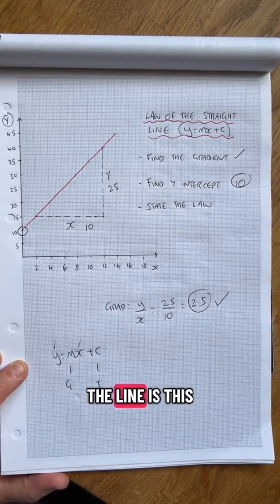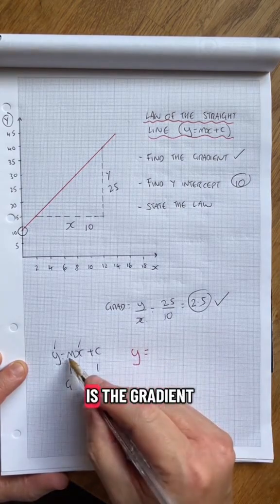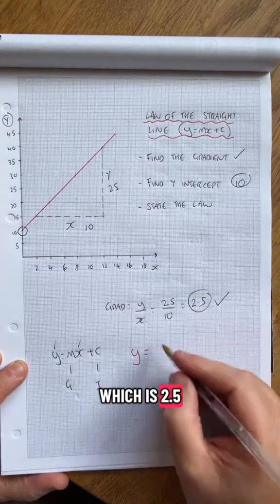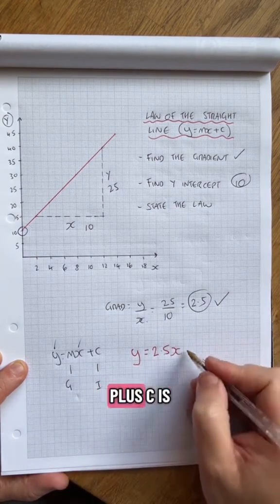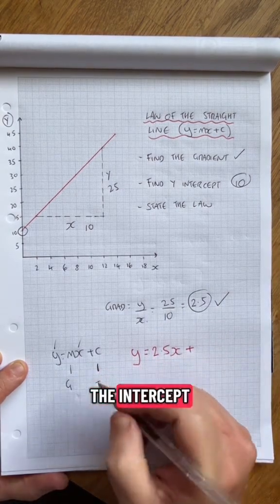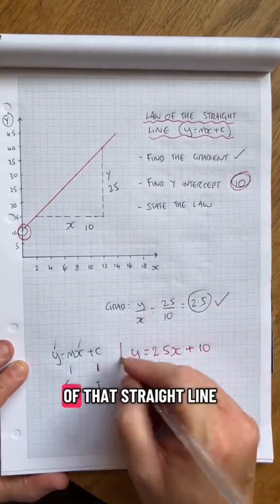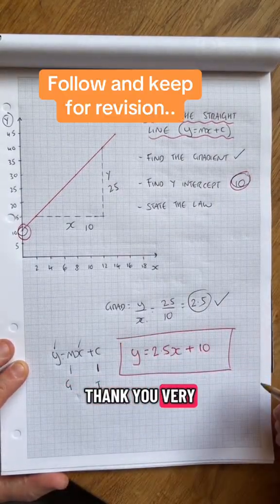So the law of the line is this: y equals m, which is the gradient, which is 2.5, times x, and then plus c is the intercept, which is 10. There's the law of that straight line. Thank you very much.